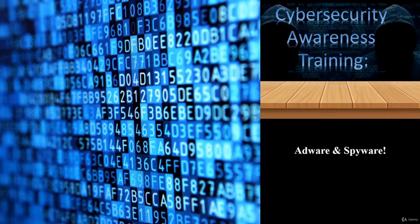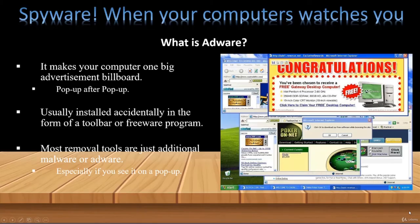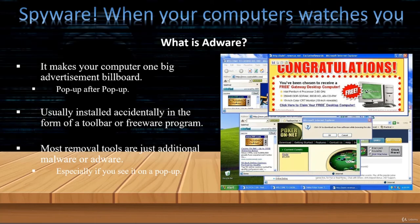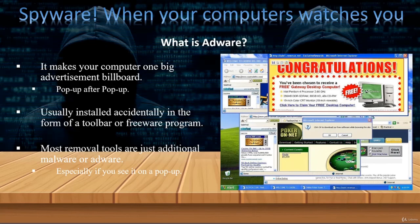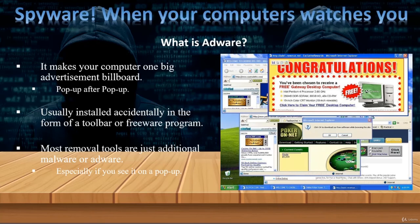Cybersecurity Awareness Training. Adware and Spyware. Adware — a type of spyware — tracks your browser history and downloads to predict what products or services you're interested in buying, then displays ads for those products to entice you to make a purchase. Adware can slow down your computer and is often installed accidentally when you install things like toolbars and freeware. If you start getting an excessive amount of pop-ups, and one offers to eliminate those pop-ups, it's likely additional malware — don't use it.